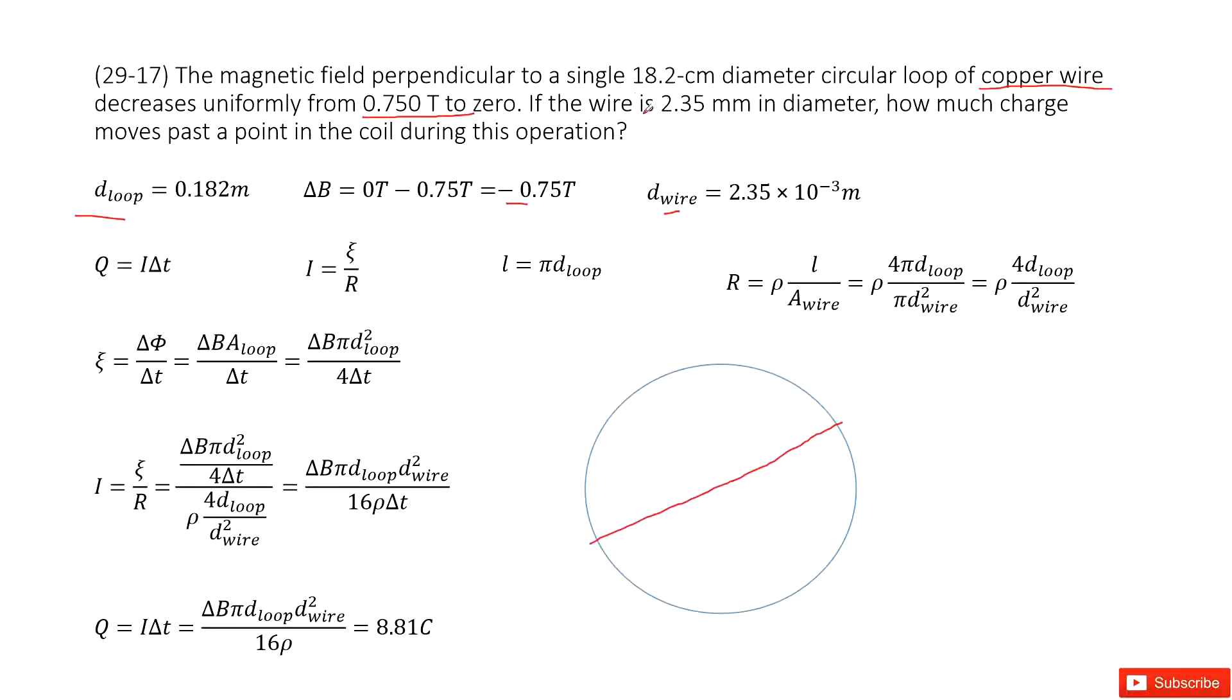And then what is the diameter for the wire? This is this one. Because this is a wire, so this is the wire diameter.